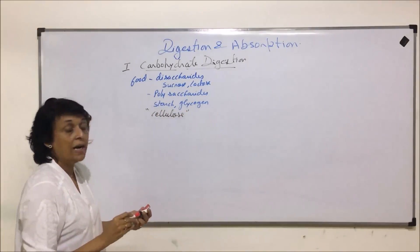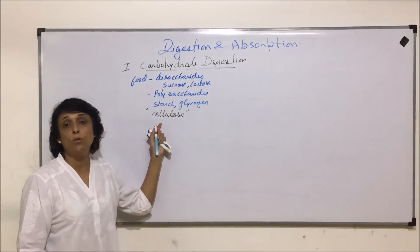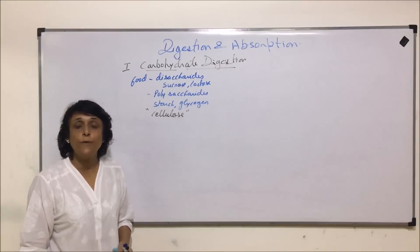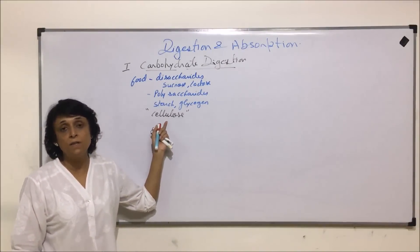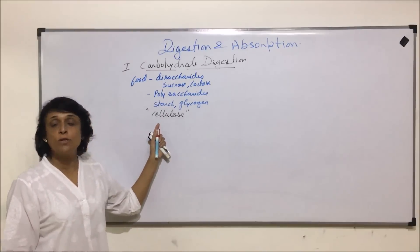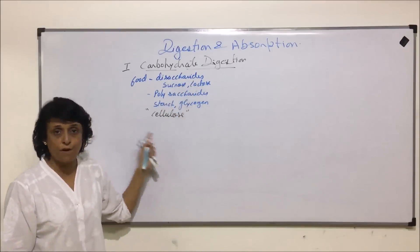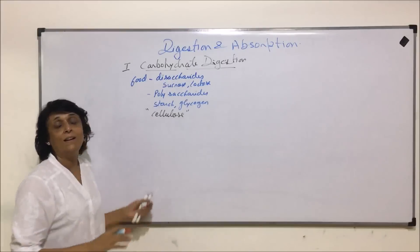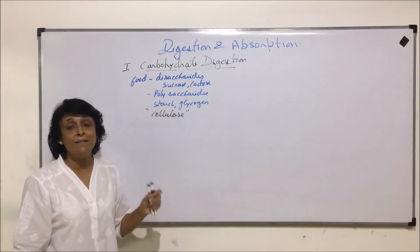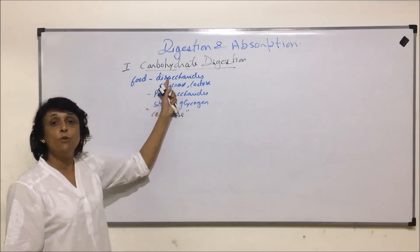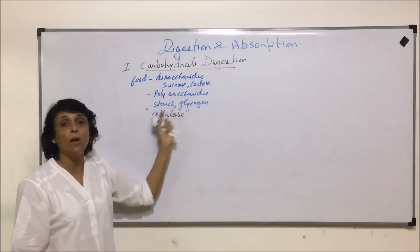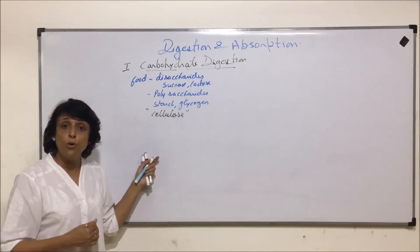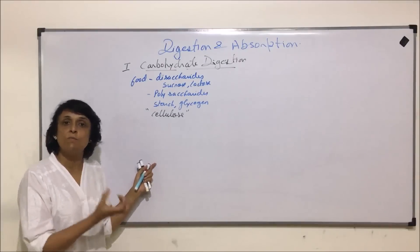Cellulose cannot be digested by any animal on its own. Its digestion is done with the help of an enzyme called cellulase, which is synthesized by certain microbes. So cellulose is a special type of digestion we will discuss later. We consume it as roughage but cannot digest it. We need to break down disaccharides and polysaccharides into monosaccharides like glucose or fructose. If we consume a monosaccharide like glucose, we don't need to digest it as it is already the smallest unit.